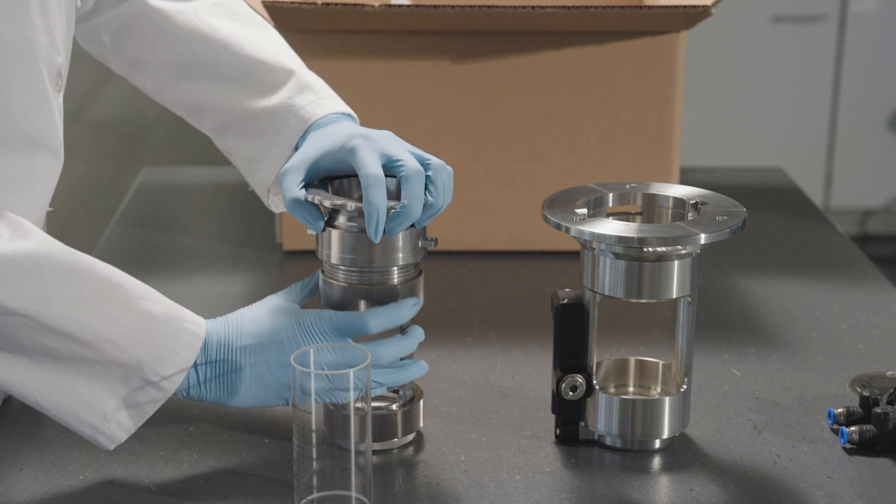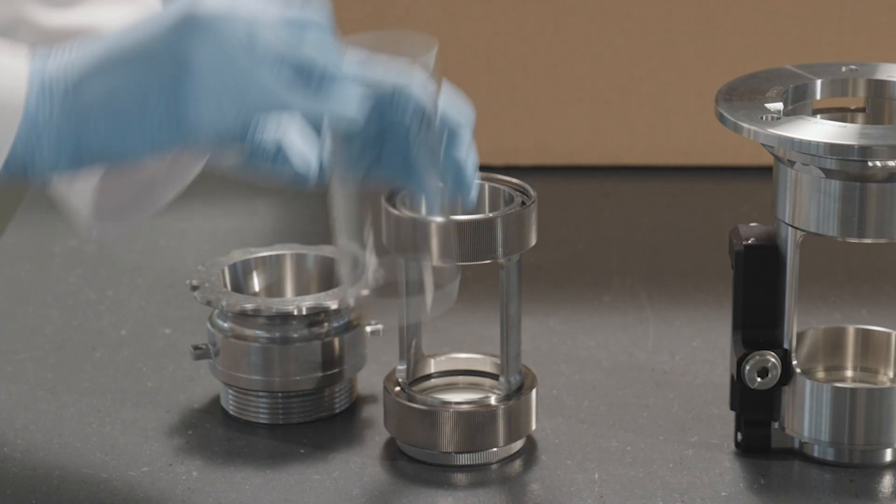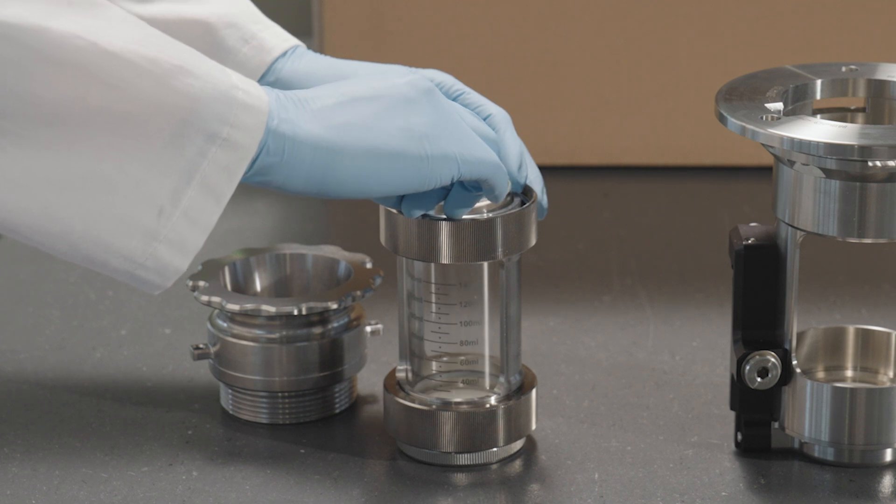Install the glass tube by removing the funnel piece. Insert the glass tube and ensure sufficient scale visibility.